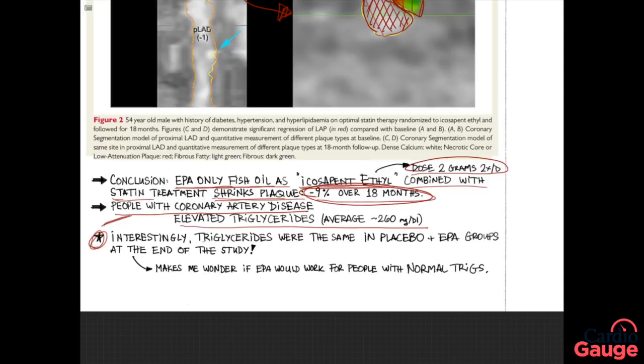Something that's really interesting to me is that after treatment, the triglyceride numbers were the same in the people who had the placebo or the EPA fish oil. The EPA is supposed to decrease triglycerides, but it turns out in the study it didn't, which is strange. It does make you wonder a little bit about the study, but anyway, another thing that makes me wonder is, well, maybe EPA would work for people with normal triglycerides if the triglycerides didn't go down and the plaque shrank.